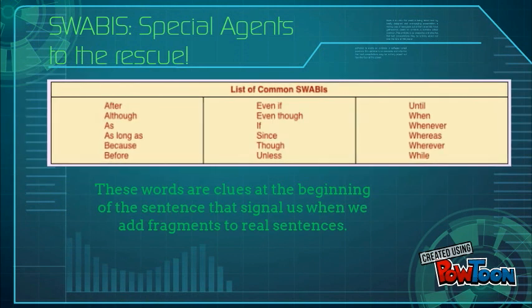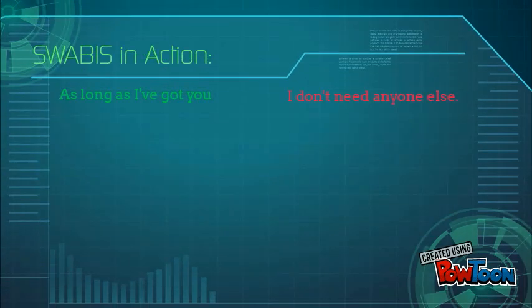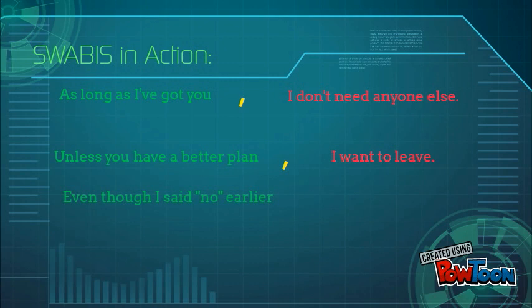How will we know when we should use a comma with things that introduce the sentence? Here's where the special agent Swabbies come to the rescue. If you memorize this list, there'll be a clue that they've started a fragment that you've added on. Swabbies are actually signal words that let us know we've added some bonus details to an original sentence. As you look over these sentences, you'll notice there's a comma in between the Swabby phrase and the original sentence.